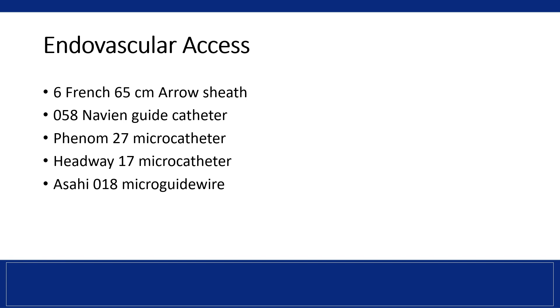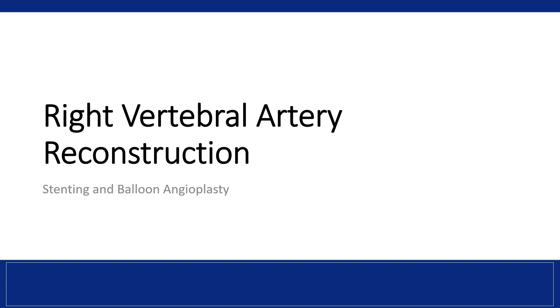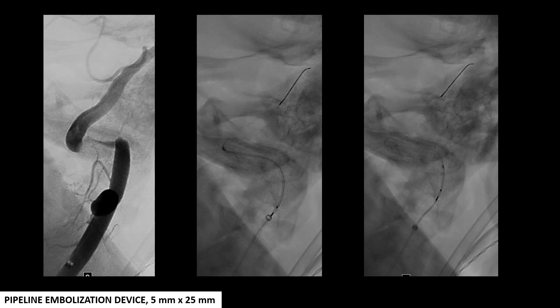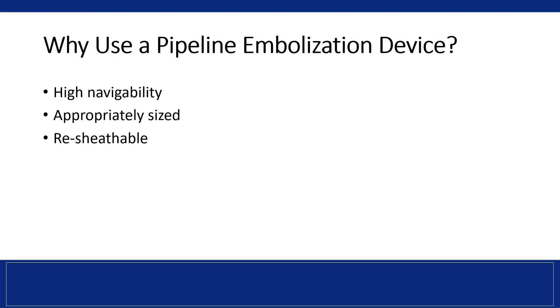Endovascular access was achieved through a triaxial support setup. Right vertebral artery reconstruction was addressed first. A pipeline embolization device measuring 5 mm by 25 mm was successfully deployed across the stenotic segment. A pipeline embolization device was chosen specifically for its high navigability, its available sizing, and ability to be resheathed.